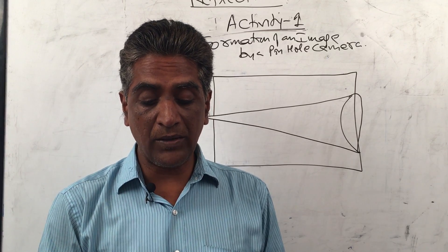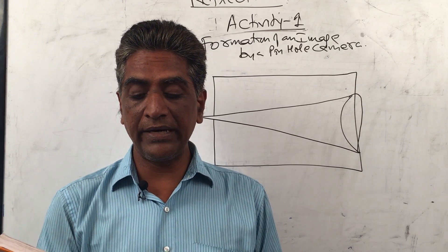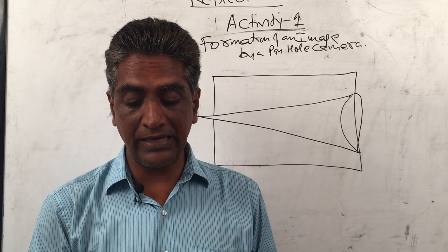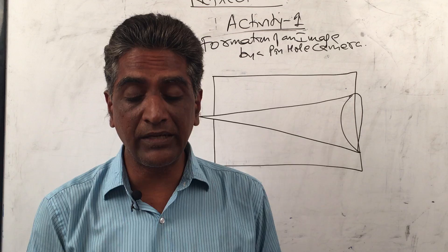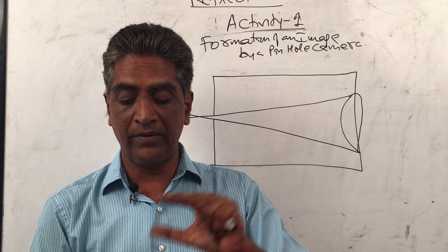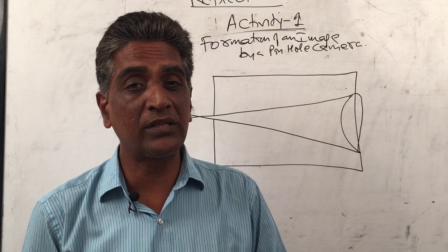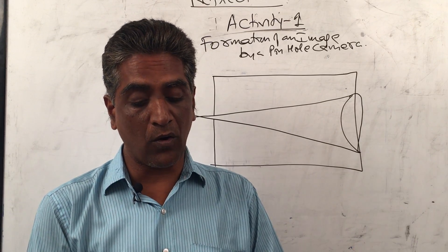Observe the flame of a candle with the pinhole camera making a big hole. Try to draw a ray diagram of the formation of an image in a pinhole camera with a big hole. By observing the figure, we can understand that the light rays coming from the top of the candle flame fall at different points on the screen. Similarly, the rays coming from the bottom of the candle flame also fall at different points.